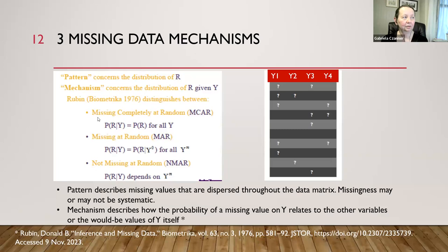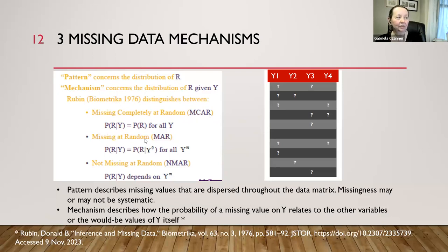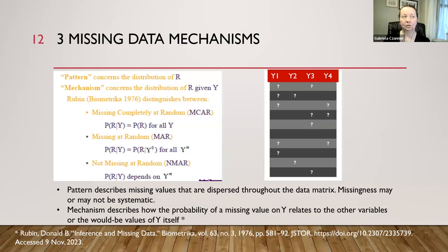Now I can define the three mechanisms. Missing completely at random, MCAR, means the probability that a value is missing for a patient, given all the features, equals some constant — the same for all features. In other words, that probability does not depend on age, gender, salary, blood pressure, or anything measured on the patient. It may be related to some variable outside the dataset that is uncorrelated with the variables we have.